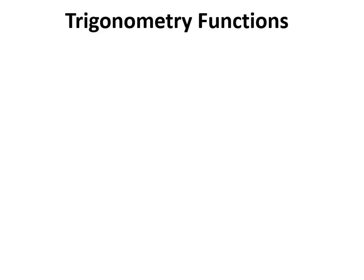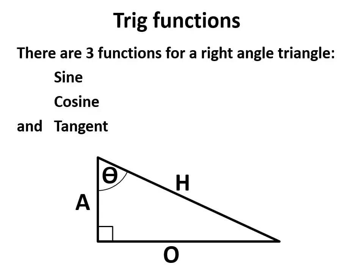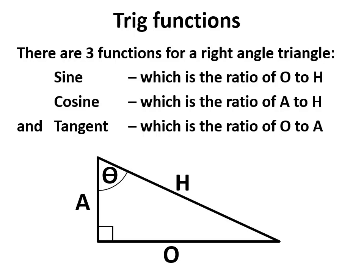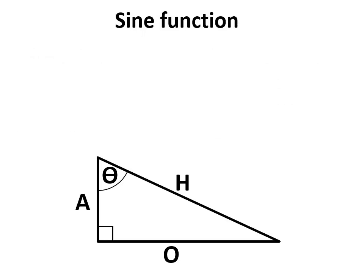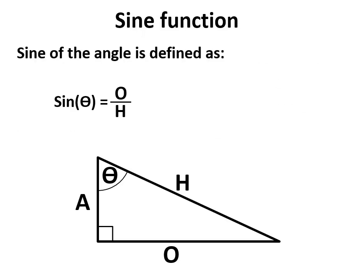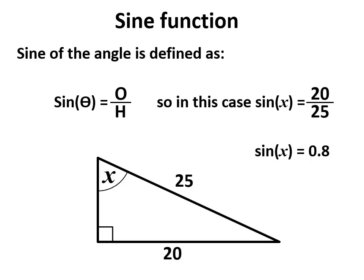This video will quickly run through how we use the functions in trigonometry and how we can shortcut them to make life easier. There are three functions: sine, cosine, and tangent. They relate to how the sides of a 90-degree triangle work. Sine is the ratio of opposite to hypotenuse, cosine is adjacent to hypotenuse, and tangent is opposite to adjacent. So the sine of the angle is the opposite side divided by the hypotenuse — in a triangle such as this, sine of the angle is 0.8.